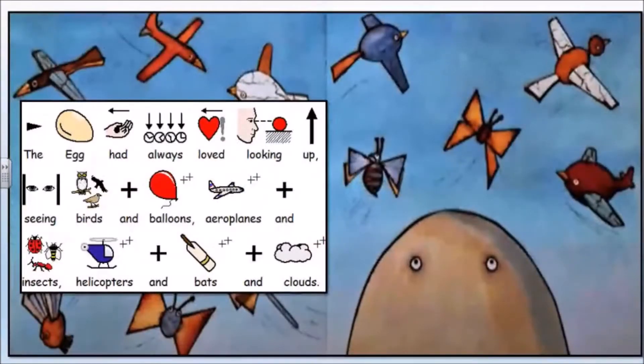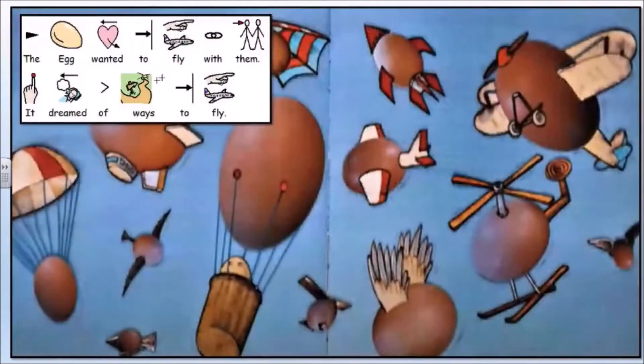The egg had always loved looking up, seeing birds and balloons, aeroplanes and insects, helicopters and bats and clouds. The egg wanted to fly with them. It dreamed of ways to fly.